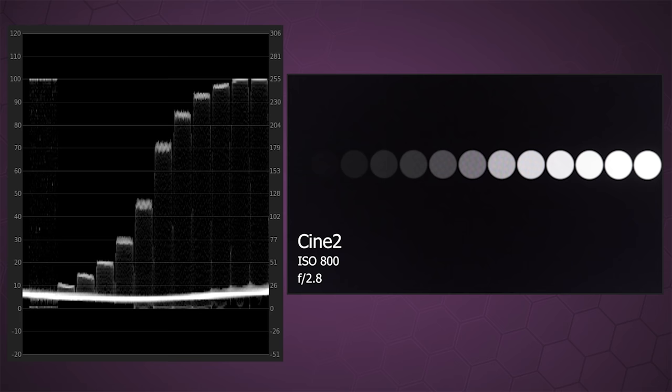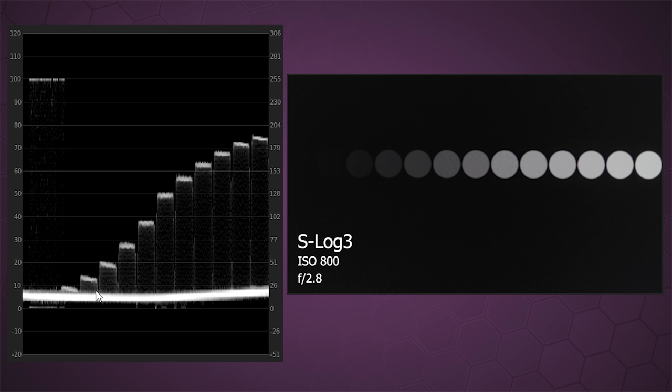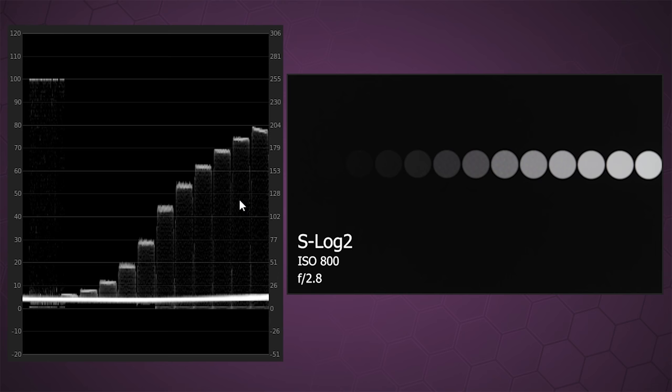Let's jump ahead to S-Log2. With S-Log2 we can see that we're nowhere near clipping anymore using the exact same exposure settings of ISO 800 and F2.8 — we're only reaching 80 IRE and it's rolling off rather nicely. Comparing that to S-Log3: S-Log3 is giving us more shadow information with higher bars, which suggests more information there. These stops are reaching higher than in S-Log2, so we get more shadow information out of S-Log3. But the highlight bars aren't reaching quite as high as S-Log2, so we get more highlight information out of S-Log2.